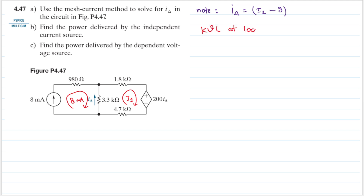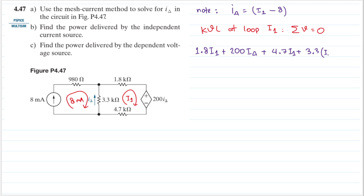Now let's do KVL at loop i1. KVL states that the sum of the voltages in a loop equals zero. Starting from the 1.8 kilo-ohm resistor, I have 1.8 multiplied by i1, plus 200 i_delta, plus 4.7 multiplied by i1, plus 3.3 multiplied by i1, but this 8 milliampere is flowing in the opposite direction so minus 8. All of that equals zero.